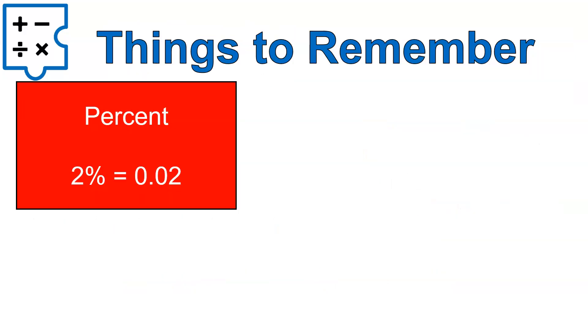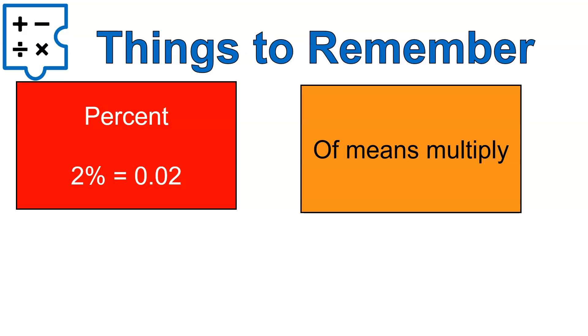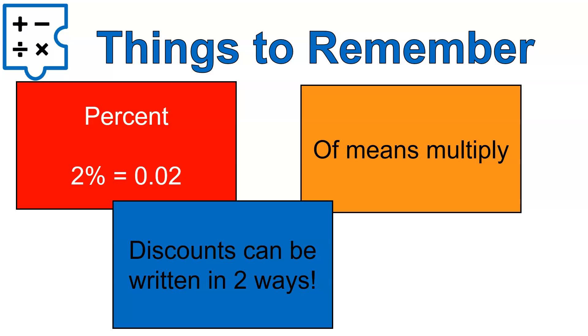A couple things to remember. First off, a percent has to be written as a decimal. Remember those zero placeholders on the right of the decimal. Of means multiply, so if you ever see a sentence and you're wondering, you're trying to figure it out in your head, think of that word of as multiplication. That should help. And discounts or increases can be written in two ways. You can either add the numbers together and keep the variable, or do the subtraction the way that we were talking about in our sample questions. I hope that lesson was helpful for you. Have a wonderful day.